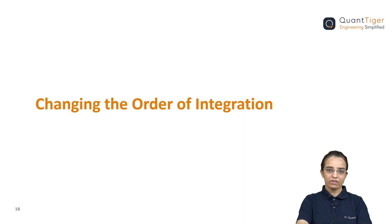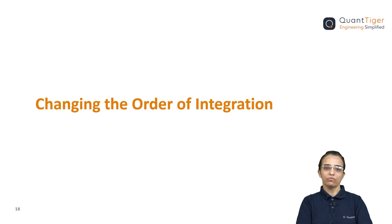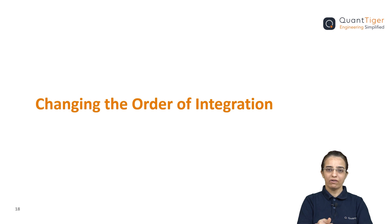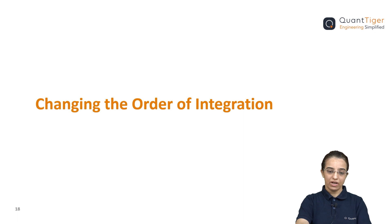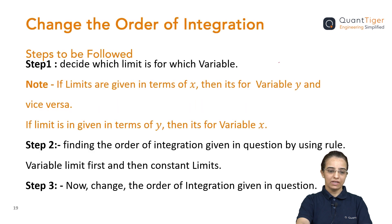First of all, we have to understand the limits or the order of integration in the question. We have to change the order of integration and then we have to simplify the question. So, as the name says, whatever is given in the question, we have to change its order. Let's see how we can solve it by using the question.